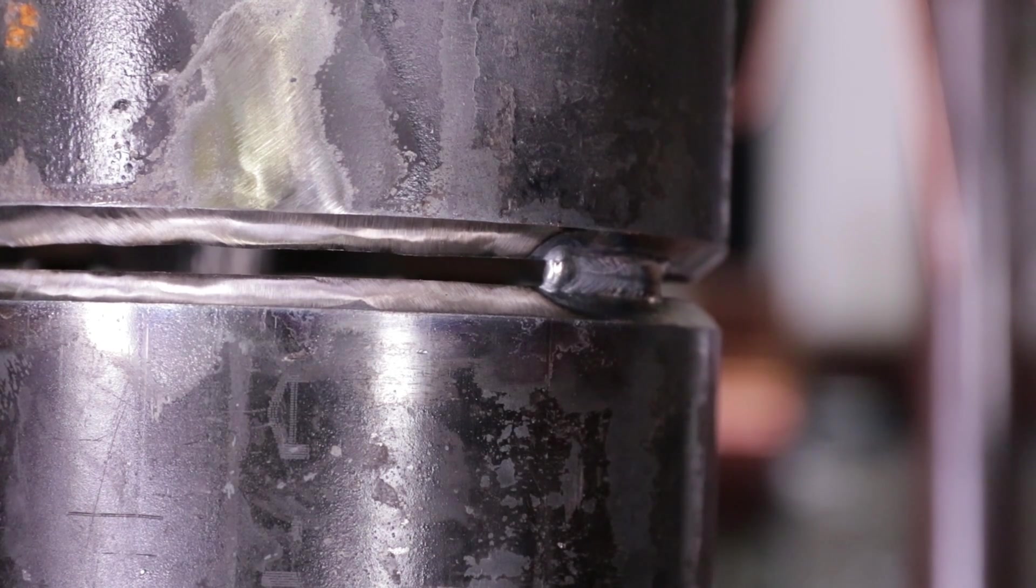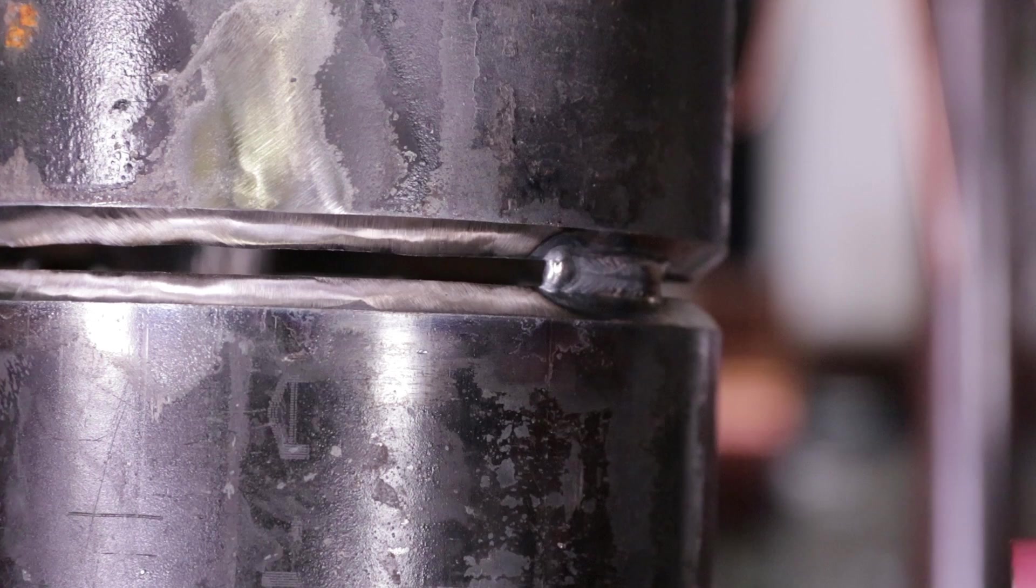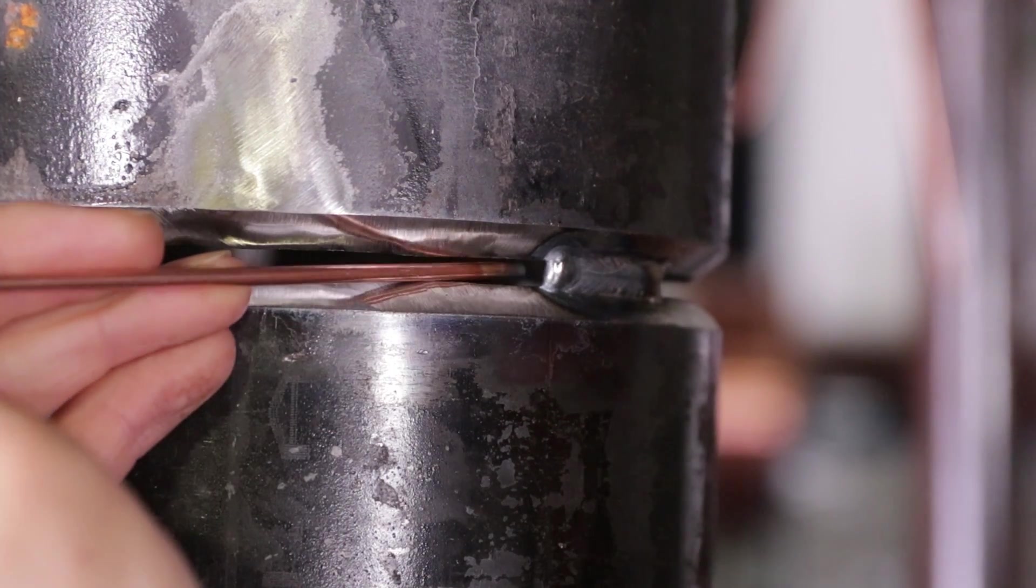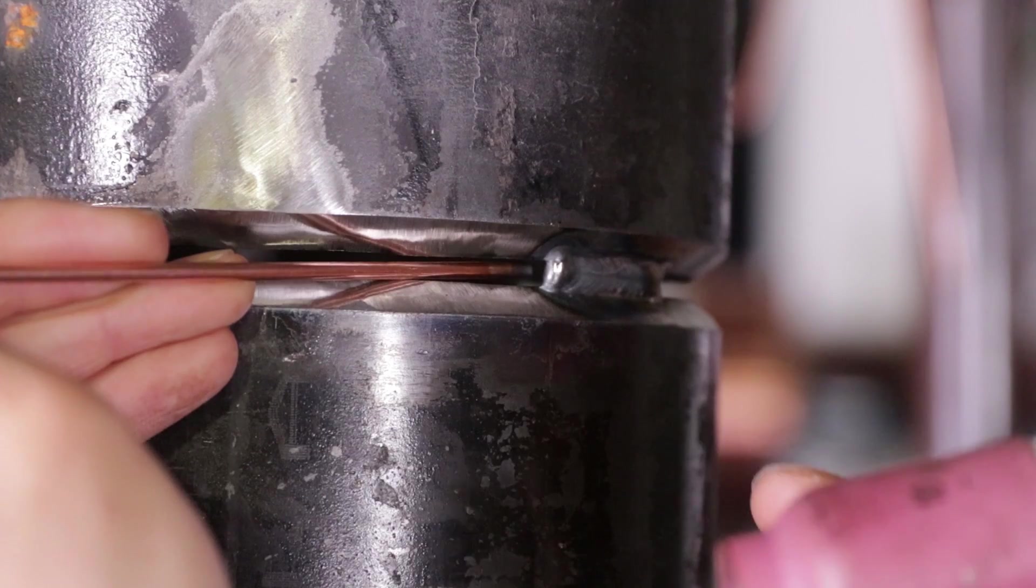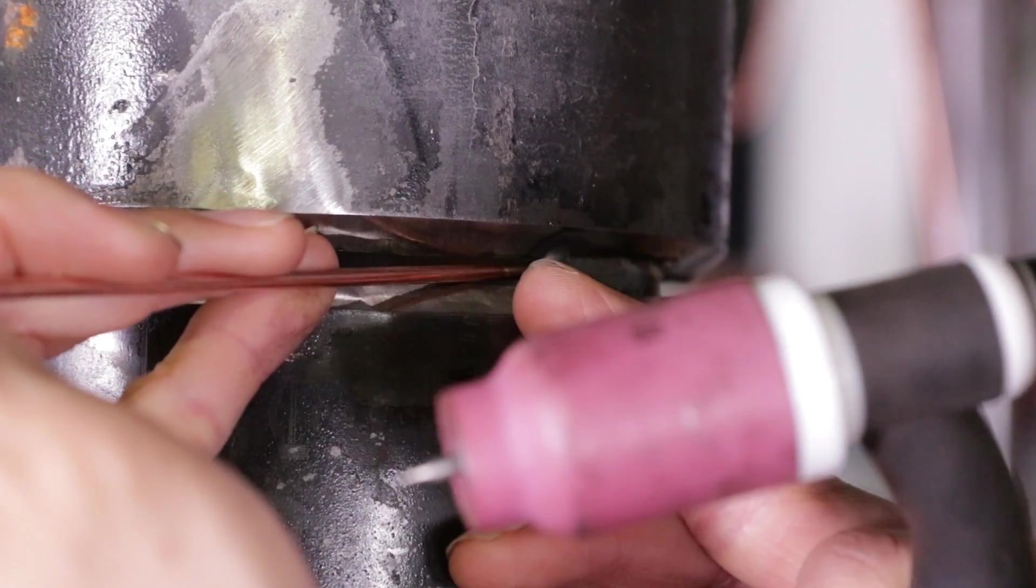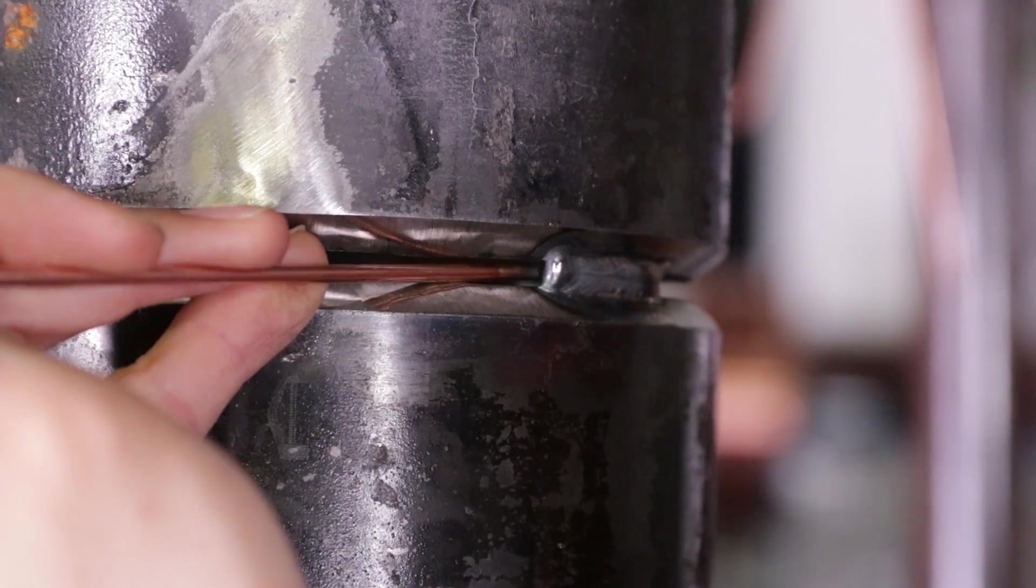The first thing you want to do whenever you're taking a root pass is you want to make sure that you keep your rod behind the bevel. And it doesn't matter if it's all of the rod, a little bit of the rod, as long as you have the tip of the rod behind the bevel, it's going to penetrate.